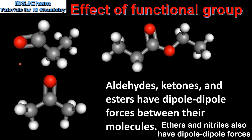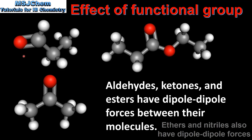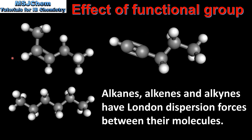The next examples are aldehydes, ketones, and esters. The strongest intermolecular forces between these molecules are dipole-dipole forces. Each molecule has a carbon atom bonded to an oxygen atom, and because of the difference in electronegativity between carbon and oxygen, these are all polar molecules. However, they lack the ability to form hydrogen bonds, so these compounds have lower boiling points than hydrogen-bonding molecules. The last examples are alkanes, alkenes, and alkynes — non-polar molecules that only have weak London dispersion forces, and therefore tend to have the lowest boiling points.